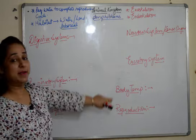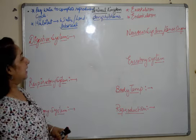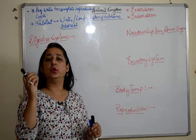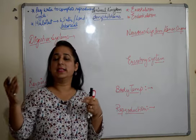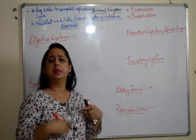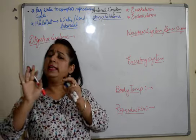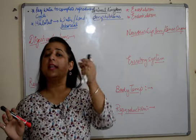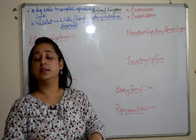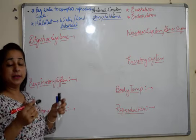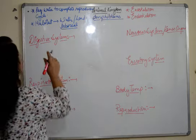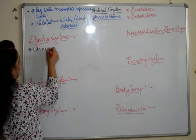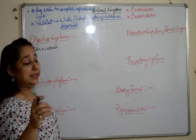Talking about all the systems — the first one is the digestive system. When we specifically talk about amphibians, we'll focus on features constrained to this phylum only. In their digestive system, the first important thing is that they are carnivores — they feed on insects and other small organisms.